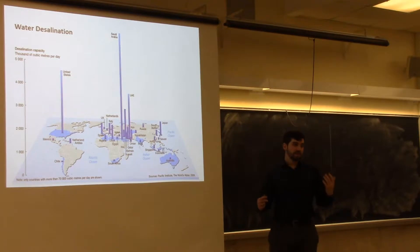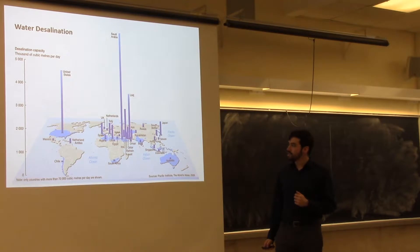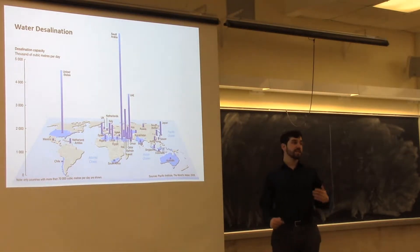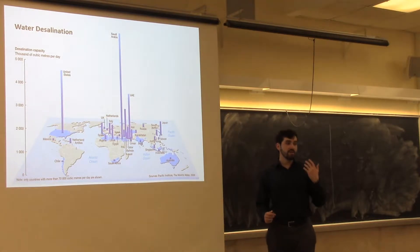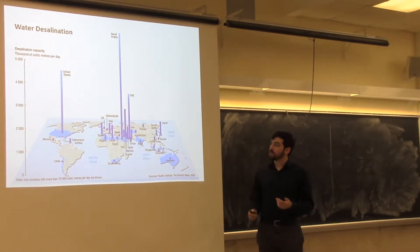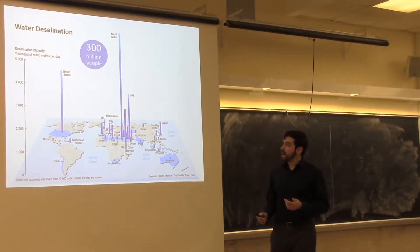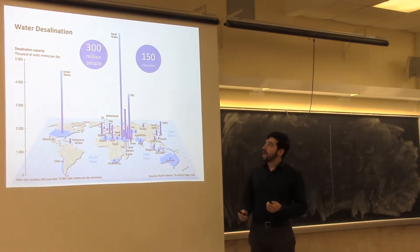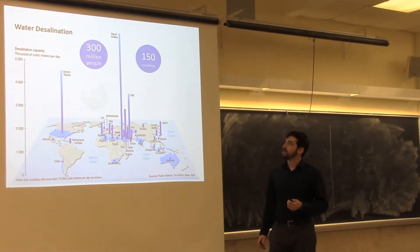A global desalination map shows the U.S. is actually one of the larger players in desalination. The Middle East relies on it extensively and many of those countries get the majority of their available water from desalination. Some use a lot for agriculture, such as Spain and Israel. Globally, about 300 million people get a significant portion of their water from desalination, serving about 150 countries.